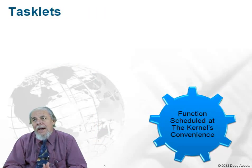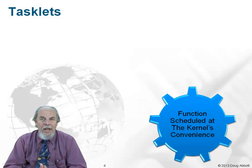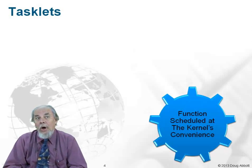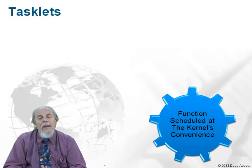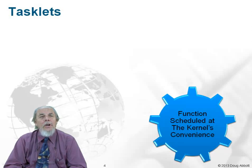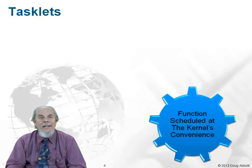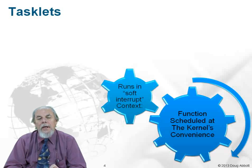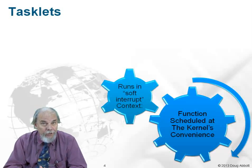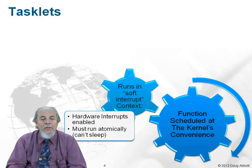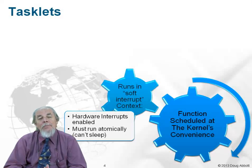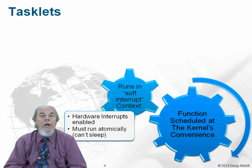The bottom half mechanism has undergone substantial modification over the years, to the point where the original bottom half mechanism is essentially gone. The two techniques currently in use are called tasklets and work queues. A tasklet is basically just a function that is scheduled to execute sometime later at the kernel's convenience. It is guaranteed to execute before the next timer tick. A tasklet runs in soft interrupt context, which means hardware interrupts are enabled.